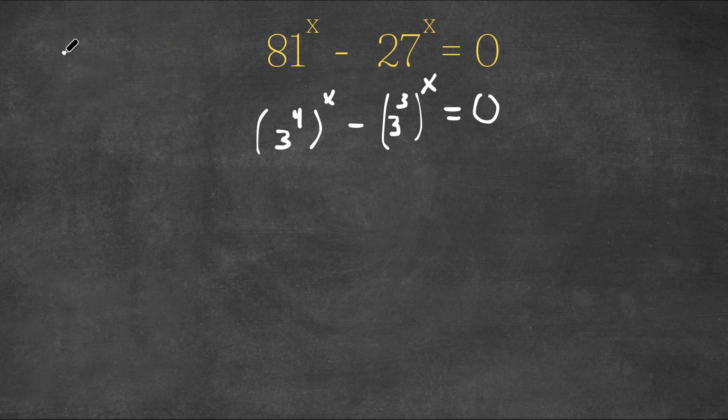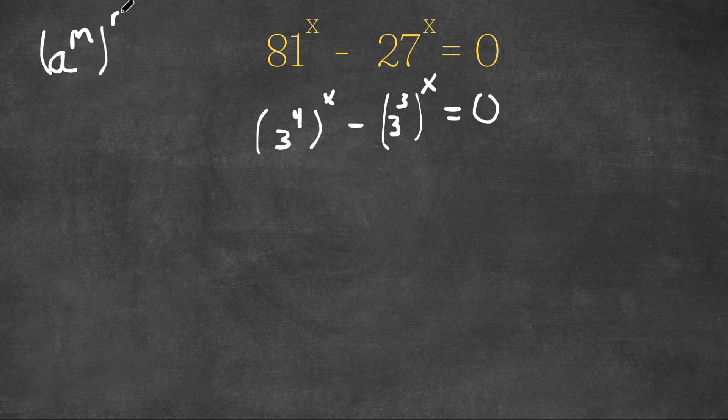Now if we have something in the form a to the power of m to the power of n, this is actually equal to a to the power of m times n.